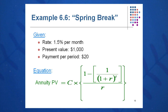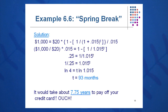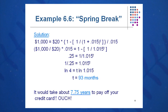So: $1,000 equals 20 times [1 minus 1 over 1.015 to the T], solving for T. Taking the natural log of both sides, I find it takes 93 months to pay off this $1,000 spring break extravaganza if you can only pay $20 per month. Ouch — that's 93 months, or 7.75 years, to pay off that credit card. Be very careful with your credit card spending.